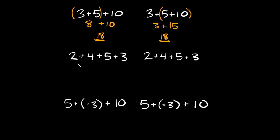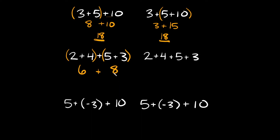Let's try a couple more examples. Here I have 2 plus 4 plus 5 plus 3. On this one I'll put the parentheses over 2 plus 4, and I'll also put some over 5 plus 3. So simplifying this: 2 plus 4 is equal to 6, and 5 plus 3 is equal to 8, and then we'll bring down this plus sign right here in the middle. So 6 plus 8 is equal to 14.